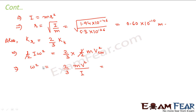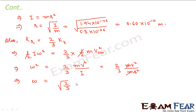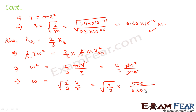This becomes (2/3)mv² / mr², and m cancels, so ω = √(2/3 × v/r). Substituting v = 500 m/s and r = 0.60 × 10⁻¹⁰ m, this comes out to be 6.80 × 10¹² radians per second. So this is the angular velocity of the molecule.